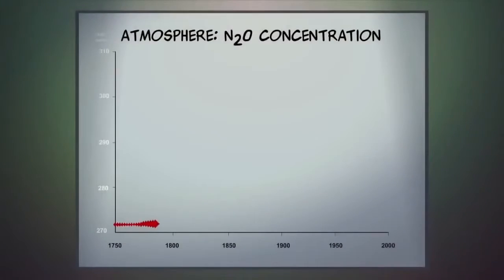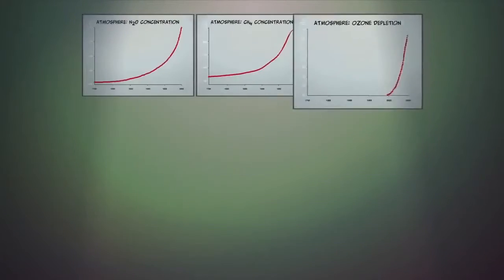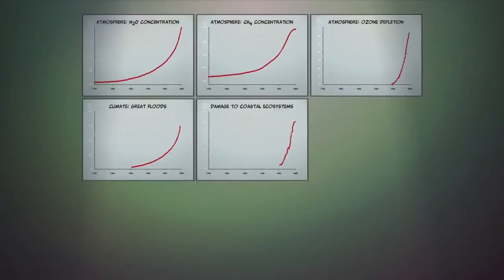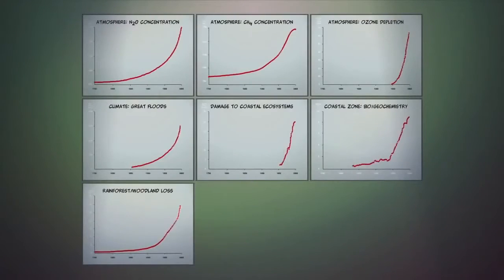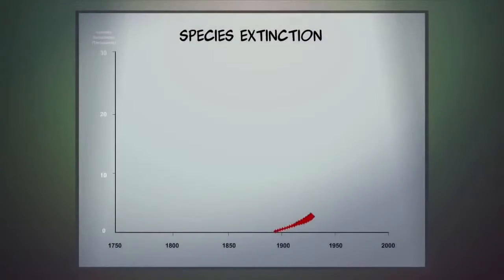Economic expansion has resulted in increases in atmospheric nitrous oxide and methane, ozone depletion, increases in great floods, damage to ocean ecosystems including nitrogen runoff, loss of rainforest and woodland, increases in domesticated land, and species extinctions.